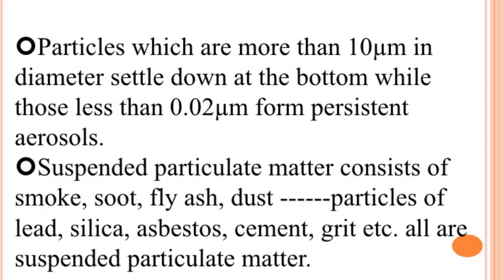Suspended particulate matter is so called because these pollutants remain suspended in air for a long period of time. Their size ranges from 0.001 µm to 500 µm in diameter. Particles less than 10 µm float and move freely with the air current. Particles more than 10 µm in diameter settle down at the bottom, while those less than 0.02 µm form persistent aerosols. Suspended particulate matter consists of smoke, soot, fly ash, dust, as well as lead, silica, asbestos, cement, and grit.